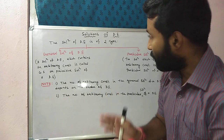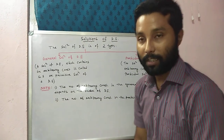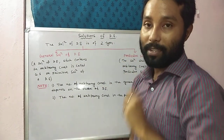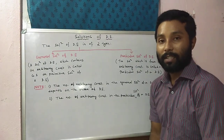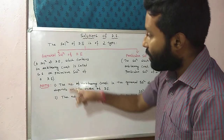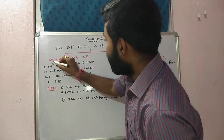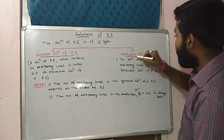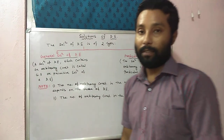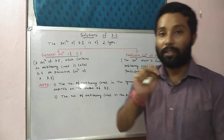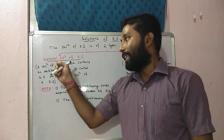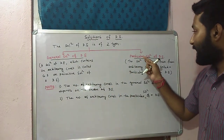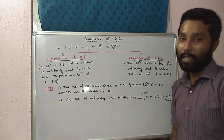First of all, I will discuss the solutions of a differential equation. The solution of a differential equation is of two types. One is the general solution of a differential equation and the second one is the particular solution of a differential equation. The first one is the general solution, or you can say primitive solution, whereas the second one is the particular solution of a differential equation.